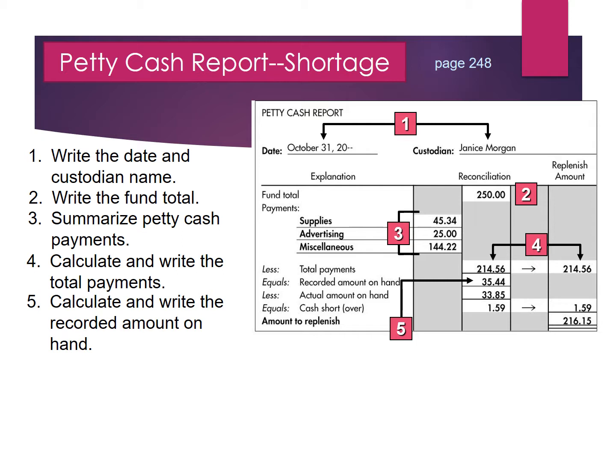We then need to calculate and write the recorded amount on hand. The recorded amount on hand is the difference between our payments and our fund total. So we subtract $214.56 from the $250 in our petty cash fund account. The difference is $35.44 — this is the amount we should have in our petty cash fund. We then go to the petty cash box, count the actual amount, which was $33.85.